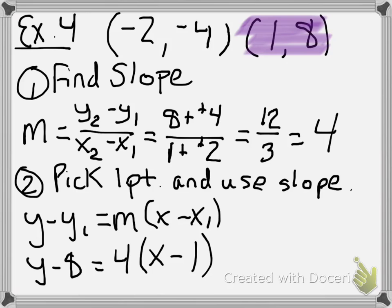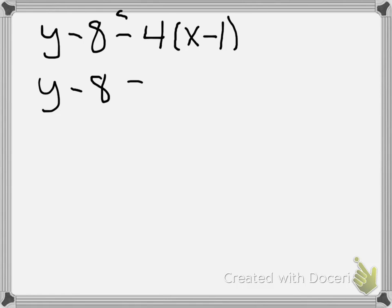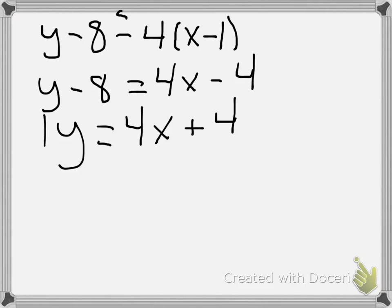It didn't ask for it, but if we were to convert it to slope-intercept form, we're going to distribute that four first on the right side, and we get y minus 8 equals 4x minus 4. We add 8 to both sides, and we get y equals 4x plus 4. There's the equation.